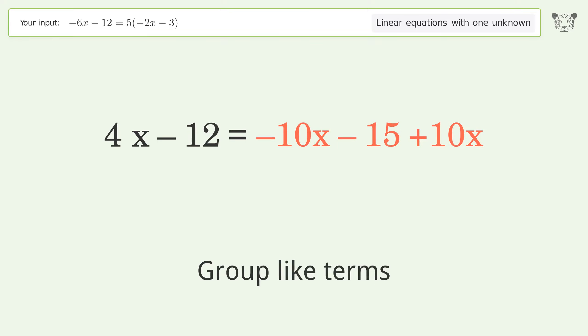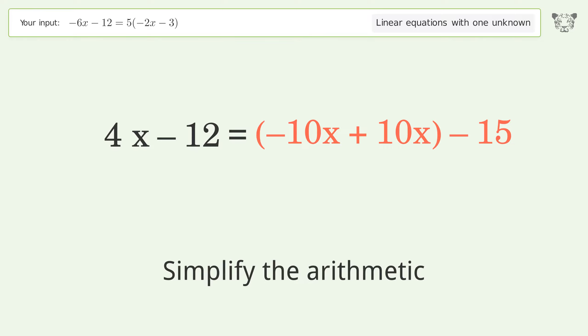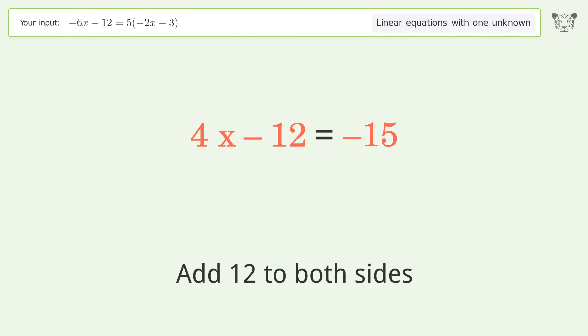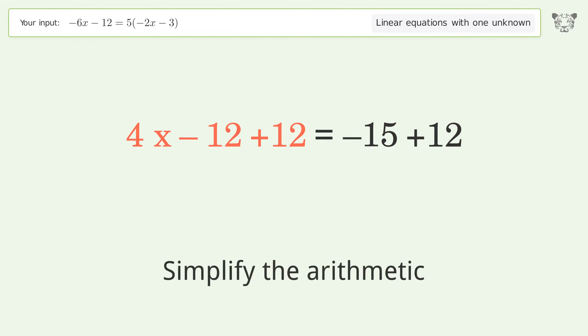Group like terms. Simplify the arithmetic. Group all constants on the right side of the equation. Add 12 to both sides. Simplify the arithmetic.